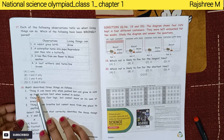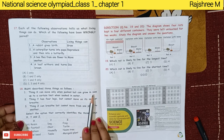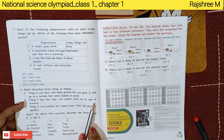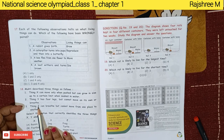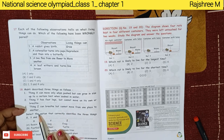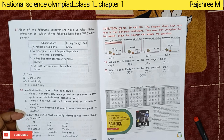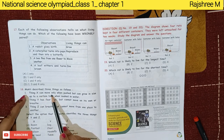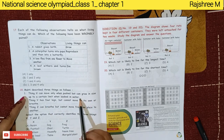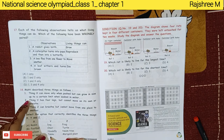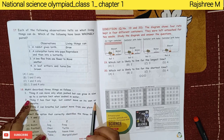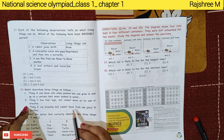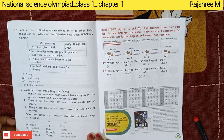Mukti describes three things. Thing X can move only when pushed but can grow in size when soaked in water — this is a gel bead. Thing Y has four legs but cannot move on its own or breathe — this is a table. Thing Z can breathe but cannot move from one place to another — this is a marigold plant. Option H is correct.